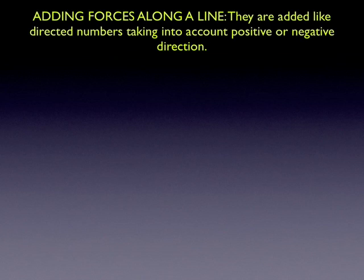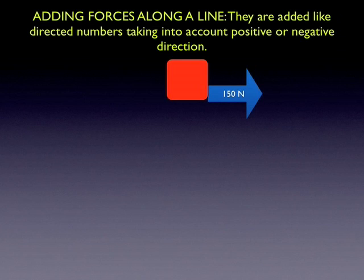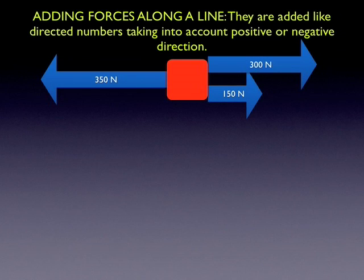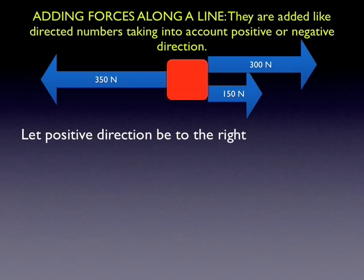Here's a numerical example. We can treat it like directed numbers. So here's a red object with three forces on it. 300 newtons and 150 newtons to the right, and 350 newtons to the left. We're going to decide to say that the positive direction is to the right. We could have said to the left. It doesn't matter. You'll still get the right answer.